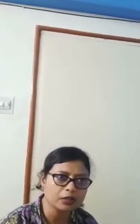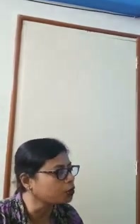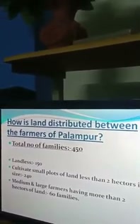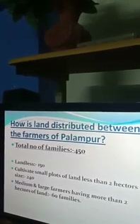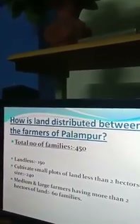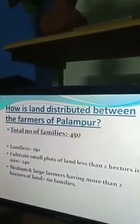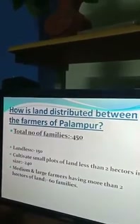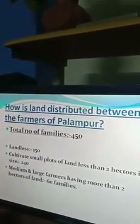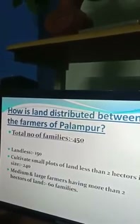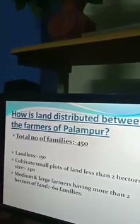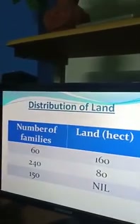The total number of families in Palampur are 450. Among them, 150 families are landless. There are 240 families who are small farmers — they cultivate small plots of land less than two hectares in size. Nearby 60 families are medium and large farmers, having more than two hectares of land. The condition is very unequal: medium and large farmers are only 60 families but they occupy the maximum plot of land.